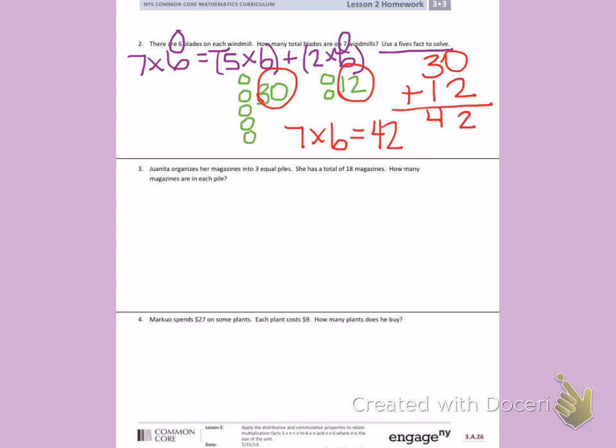Number three: Juanita organizes her magazines into three piles. She has a total of eighteen magazines. How many magazines are in each pile? I have a total of eighteen, and they are in three equal piles. I know my total and I know my groups. My piles are my groups. I do not know my size.